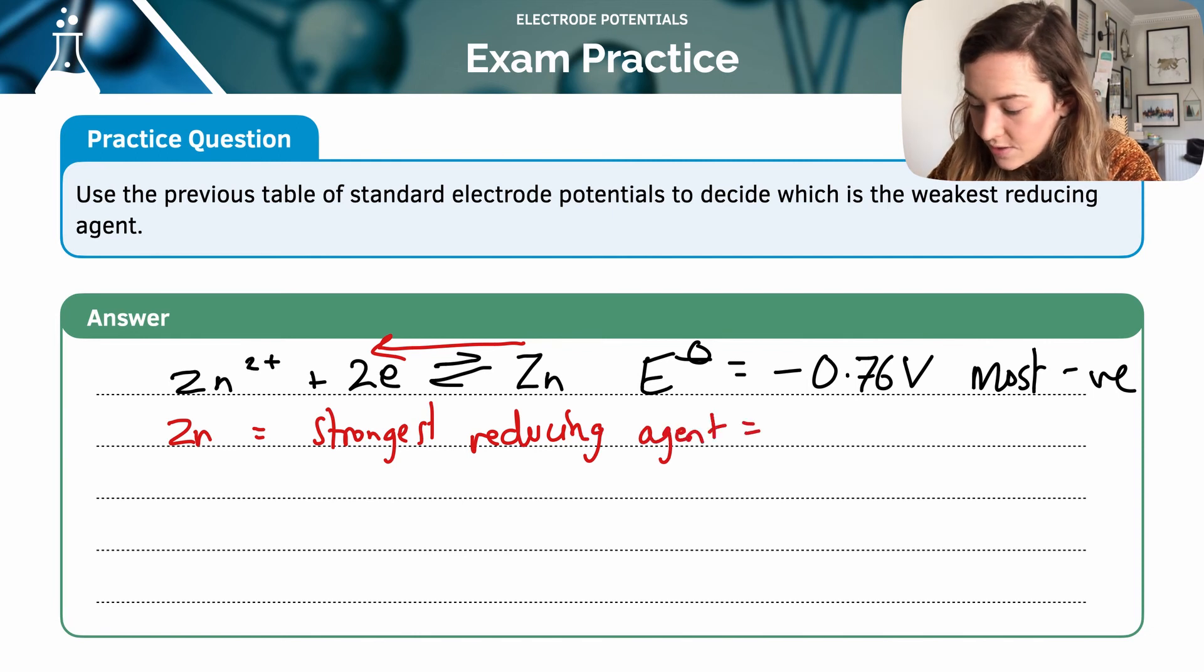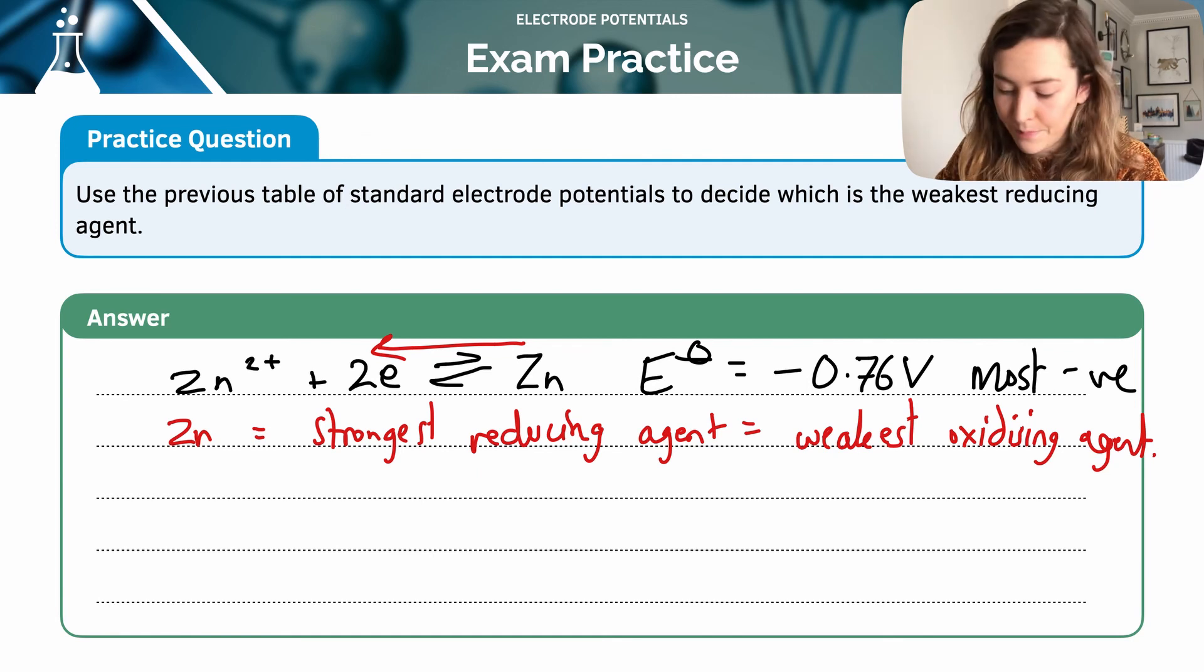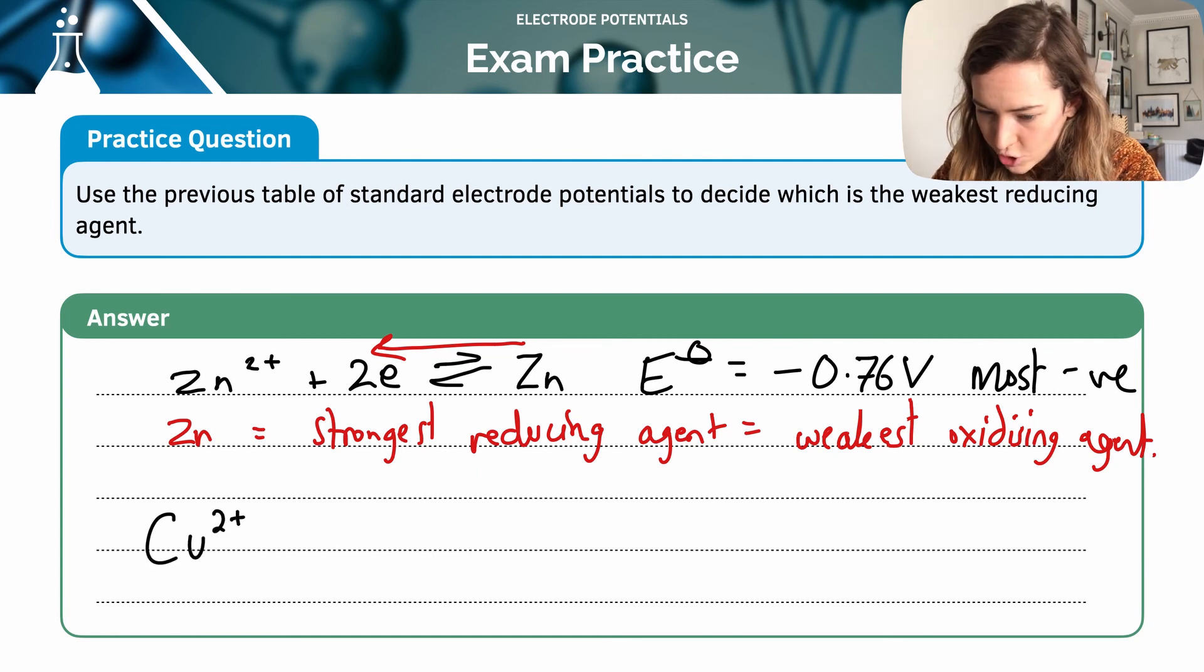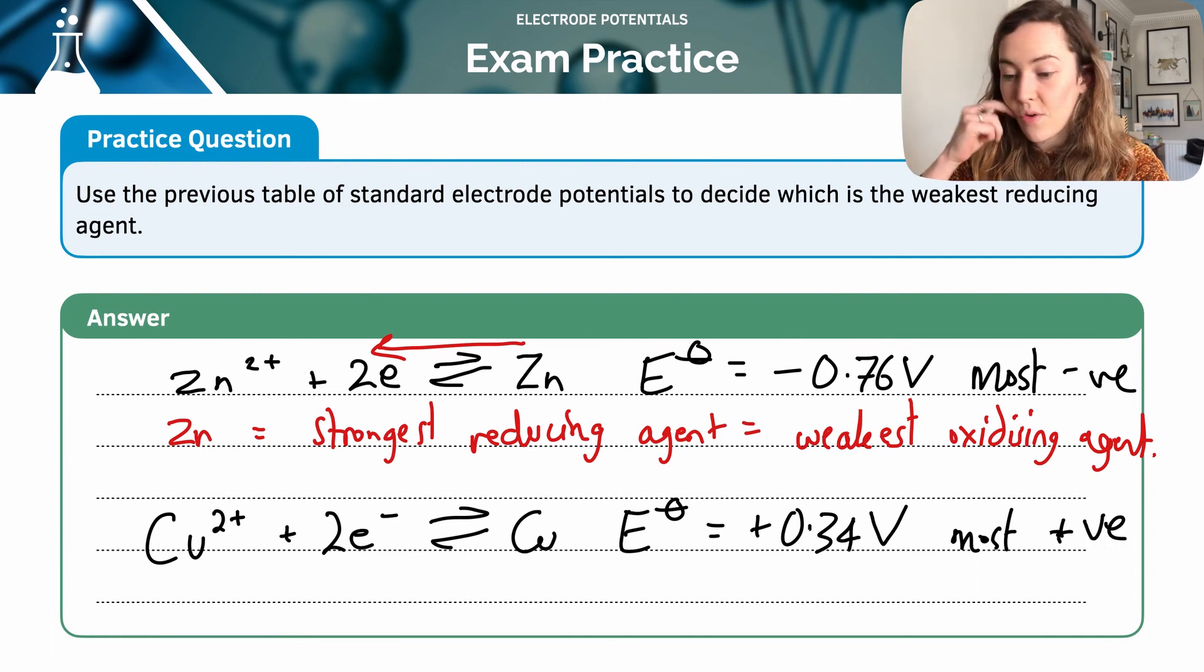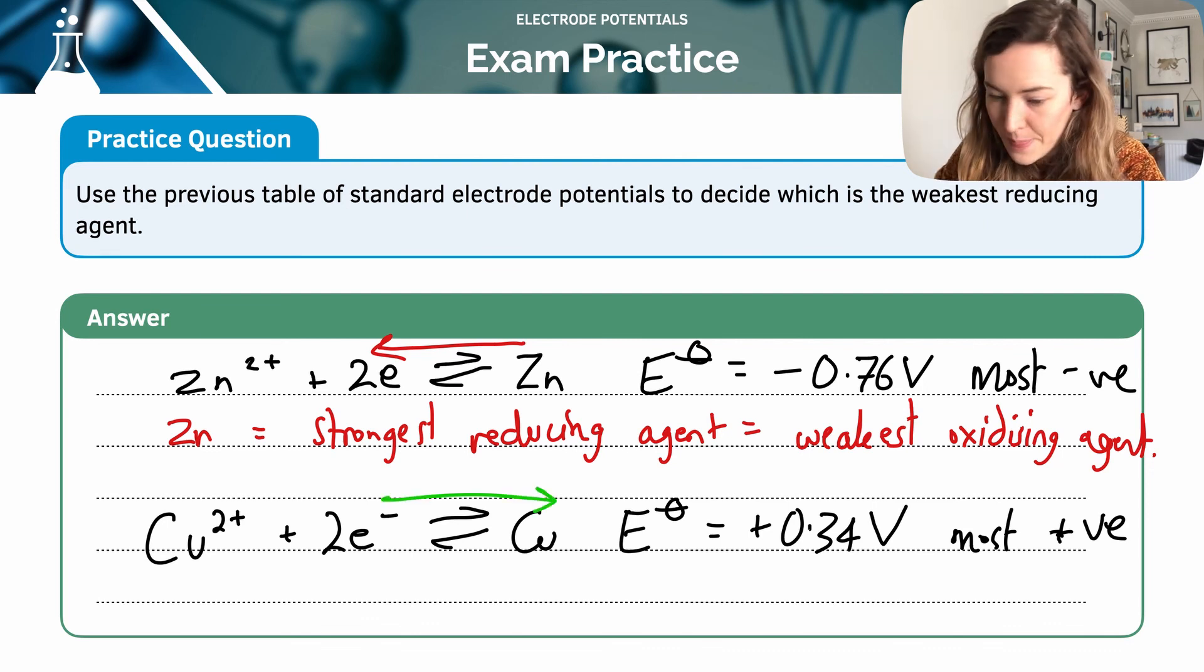Which means it's the weakest oxidizing agent. Then from my copper electrode—if I just remind you of the equation here, 2H+ plus 2e- gives H2 gas, 0.00—now copper at 0.34 is the most positive electrode potential in the table. So this reaction, the forward reaction, is most likely. In this particular case, Cu2+ will be the strongest oxidizing agent.